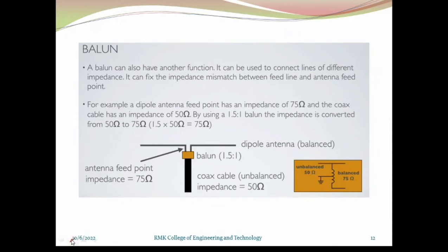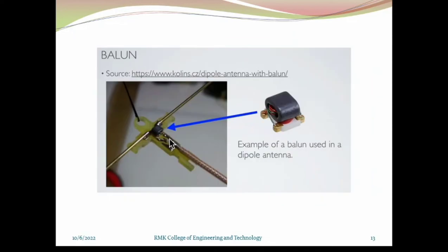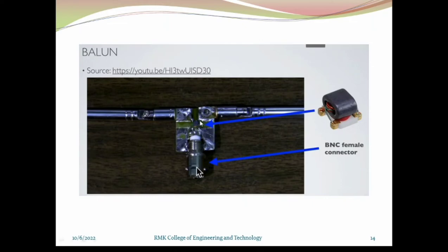Now we will discuss an example. This balun system is going to match with a 1.5:1 ratio. If your dipole antenna is connected with your coaxial cable, the coaxial cable impedance is 50 ohms and the dipole impedance is 75 ohms. While joining 75 ohms to 50 ohms, the impedance is not properly balanced. So in order to balance the impedance, we use a balun with a ratio of 1.5:1. This balun will make the 75-ohm dipole equivalent to the 50-ohm coaxial cable. This is the real example, along with a practical real-time picture of the balun connected with the dipole antenna.